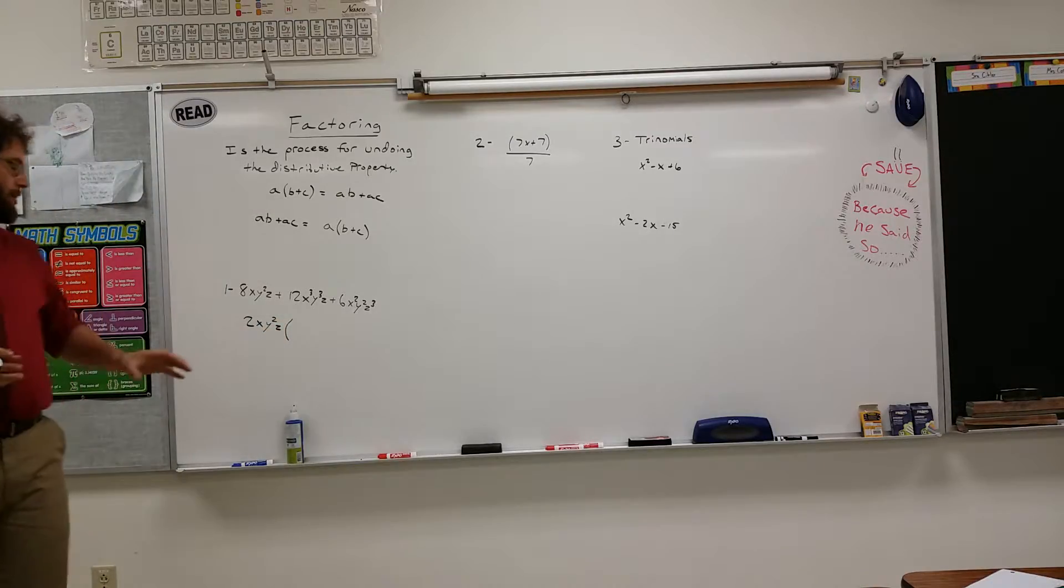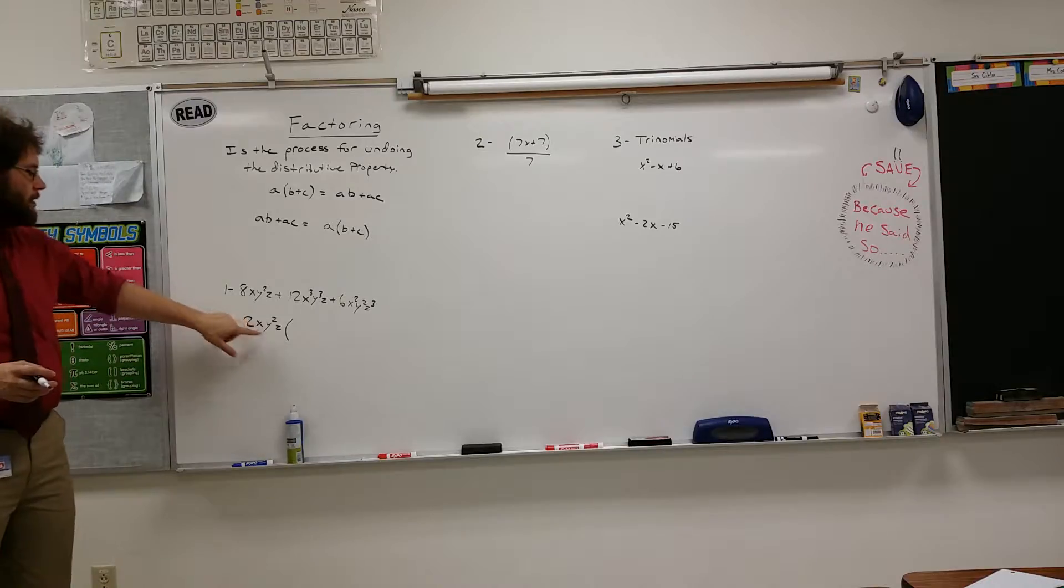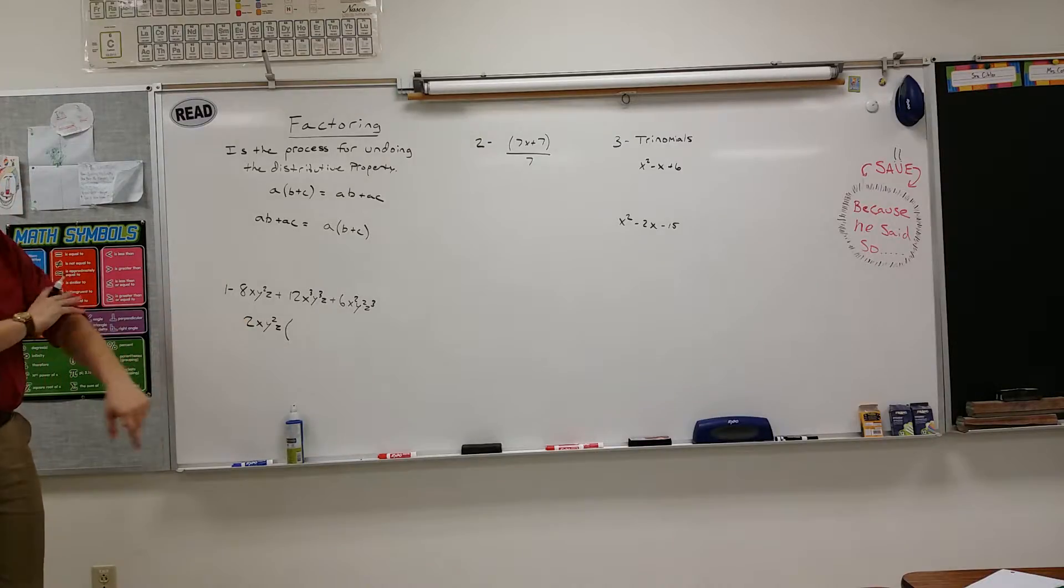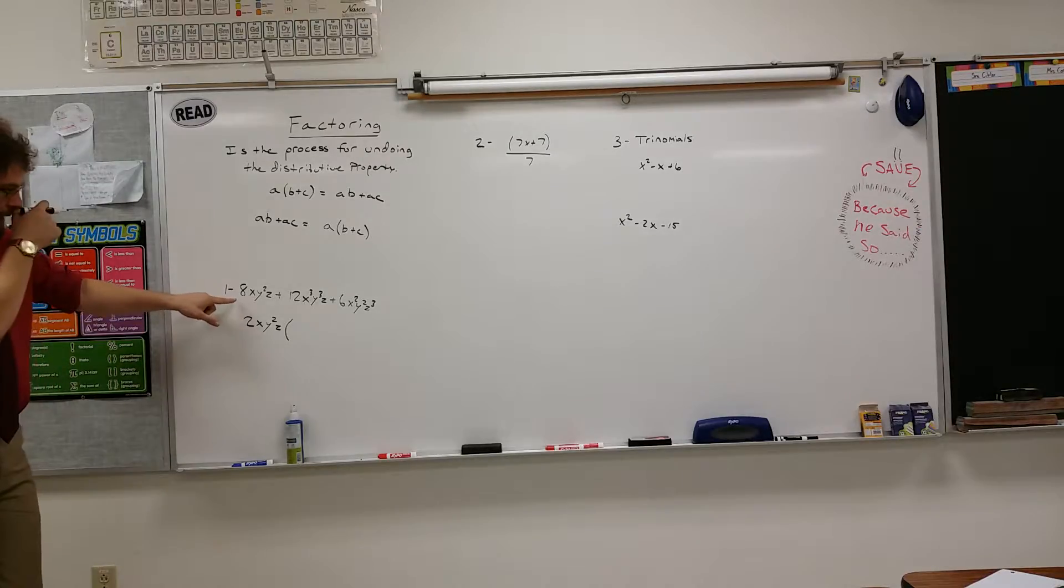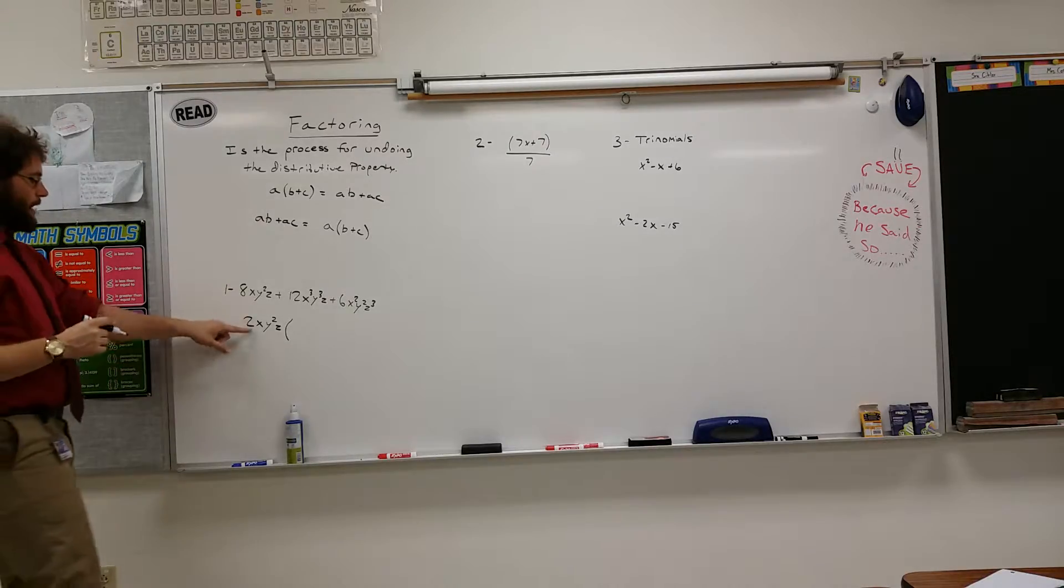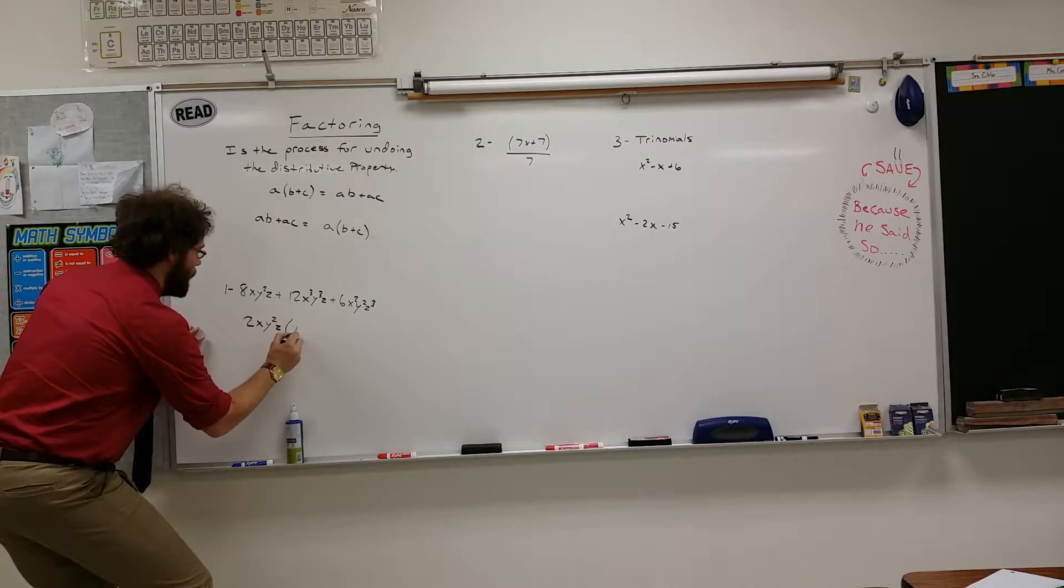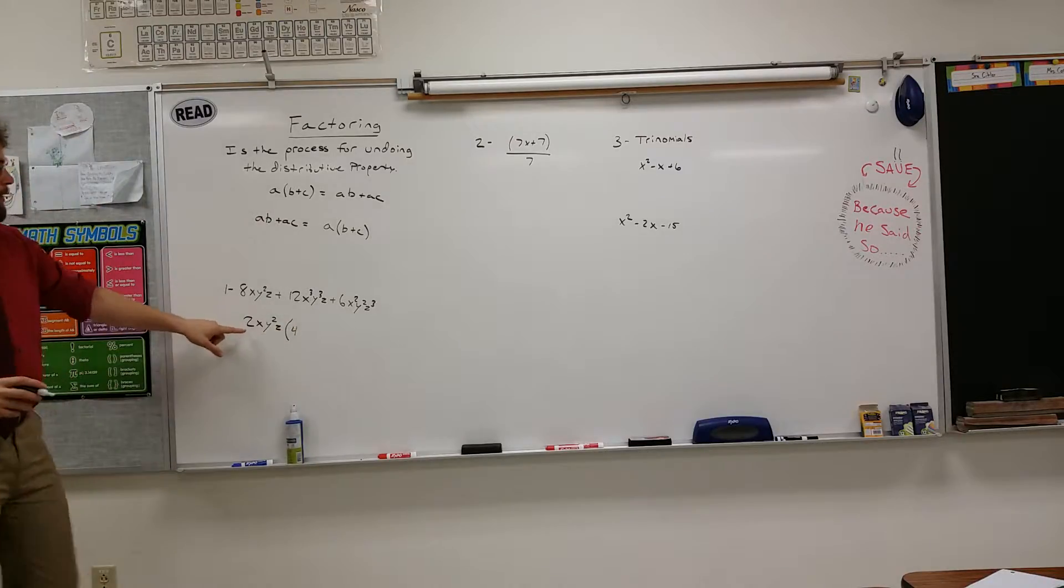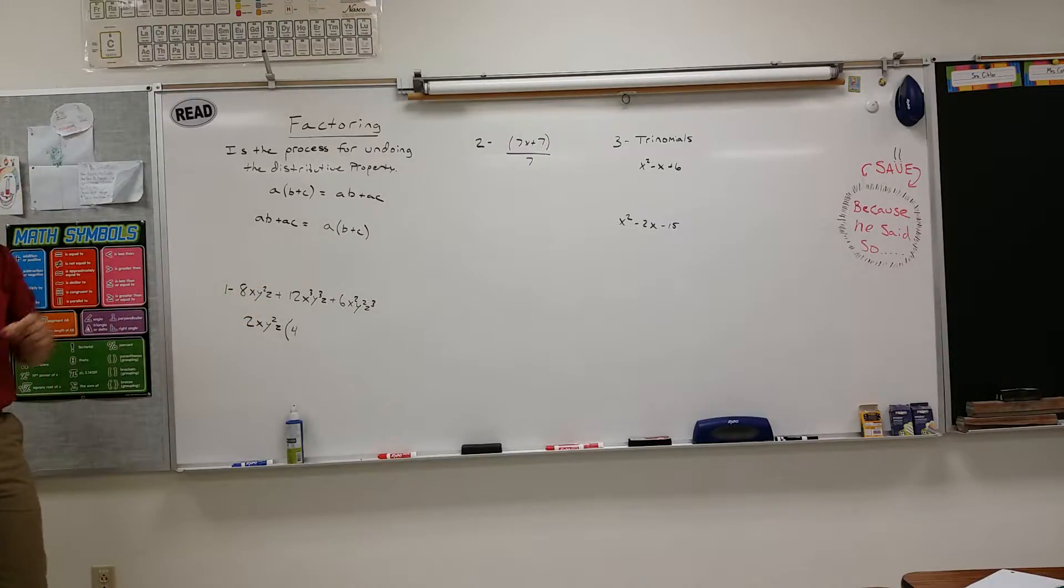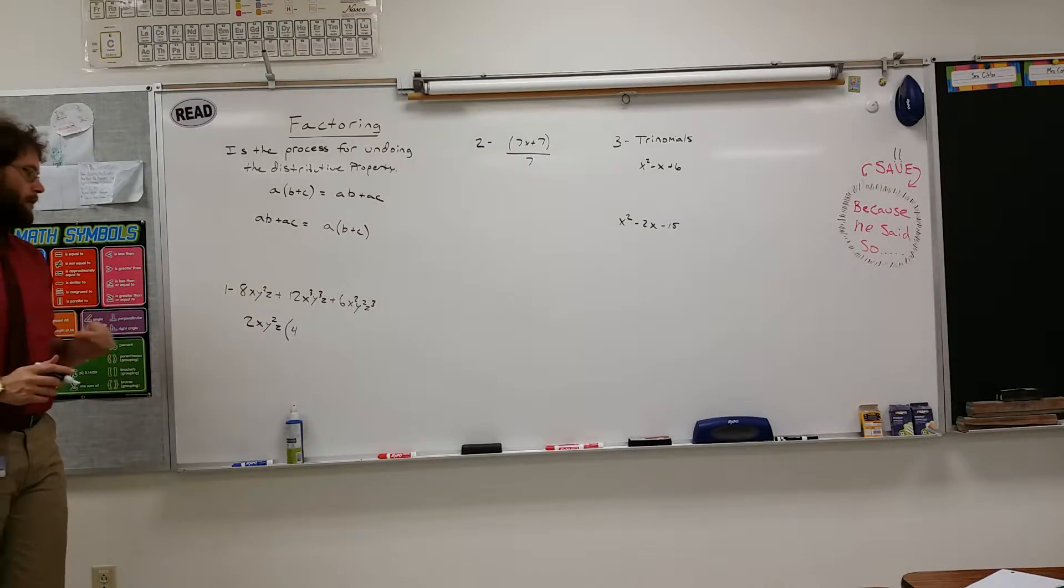So basically what you're going to do is take your greatest common factor you factored out, and you're going to divide it into each value of your original thing. So we've got 8XY squared Z, so divide that by this, and you'll get 4. And that's it. All the letters divide away. So you get just ones for those.